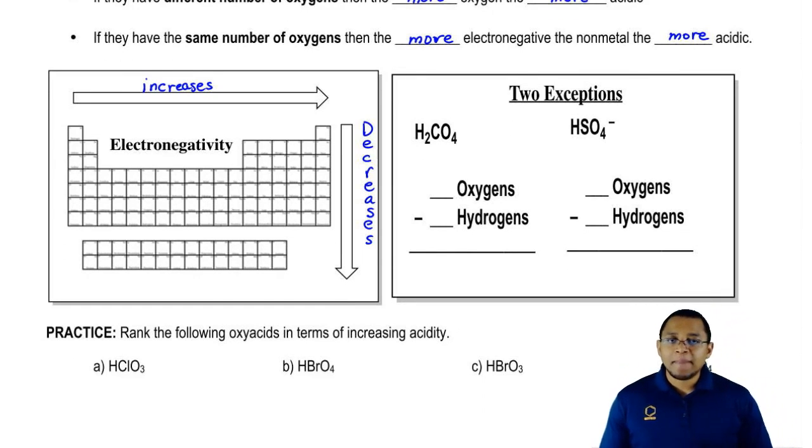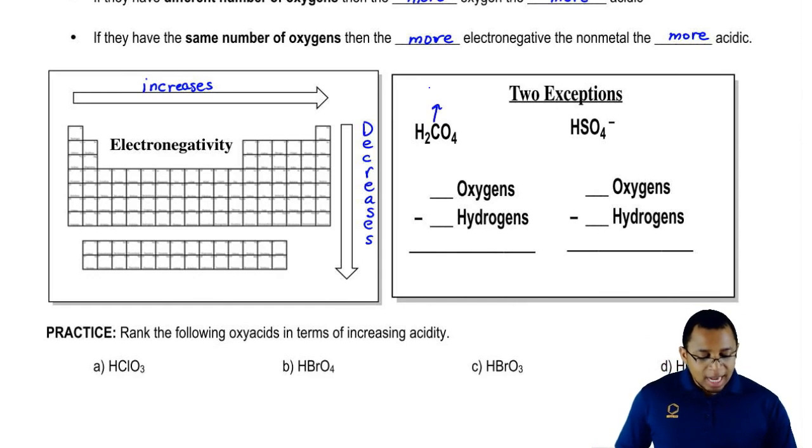Let's look at this first compound, H2CO4. We say that this compound is called oxalic acid.